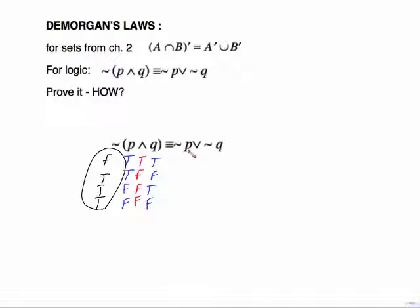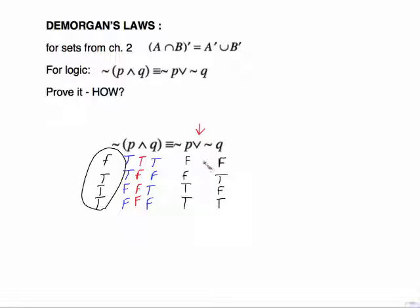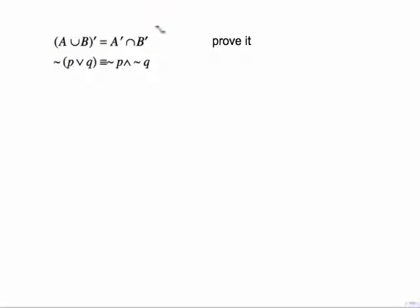For the right side: not P goes false, false, true, true. Not Q goes false, true, false, true. Now we are looking at OR — the only time an OR statement is false is if both simple statements are false. So the first row is false and the rest are true. Looking at the two circled columns, they are the same, and we have proven that DeMorgan's Law works.